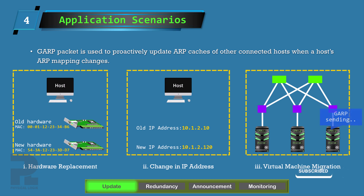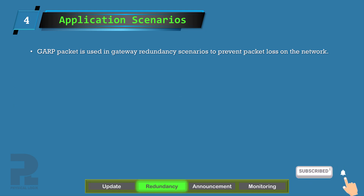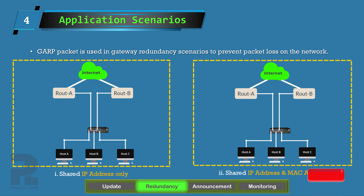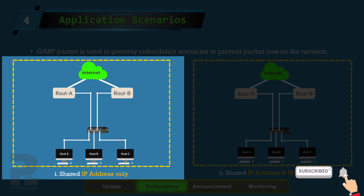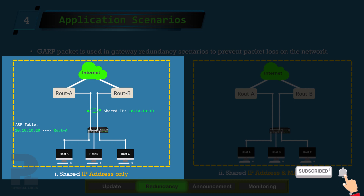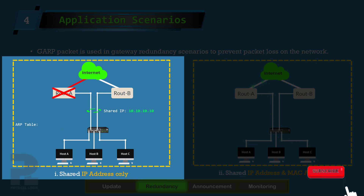Using the same IP address but now providing services via different hardware on the new machine ensures service continuity and guarantees optimal network operation. Gratuitous ARP messages can also be used in gateway redundancy scenarios. This occurs when two devices either share the same IP address while using different MAC addresses, or both devices share an IP address as well as a MAC address. Based on this topology, two routers are used as the default gateway of hosts A, B, and C. Each router interface has a unique MAC address, but they share the IP address 10.10.10.10, with router A being the primary gateway actively forwarding traffic to the internet. When router A fails, router B takes over. To prevent end stations from sending IP packets to router A's hardware based on the existing mapping, a Gratuitous ARP message is broadcast by router B to inform all other hosts of the new mapping.